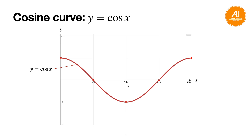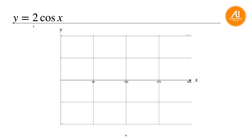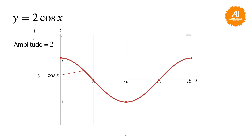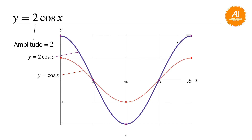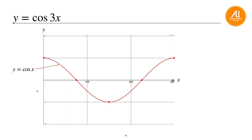For y equals to 2 cosine x, draw the usual cosine curve first, then apply amplitude 2. Multiply each y-coordinate by 2: the starting point of 1 becomes 2, the minimum of minus 1 becomes minus 2, and zeros remain zero. Connect the dots to get the stretched cosine curve.